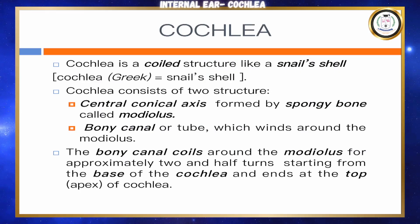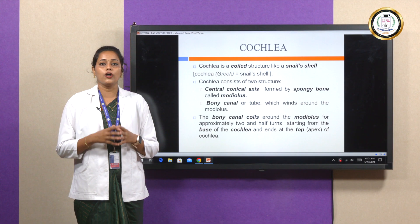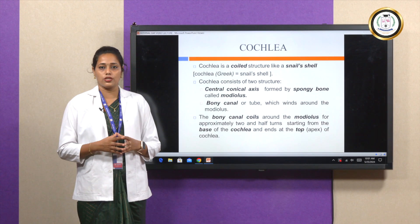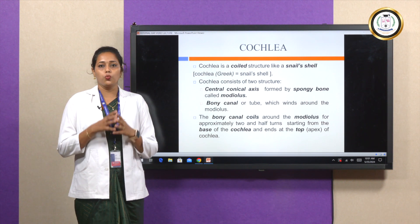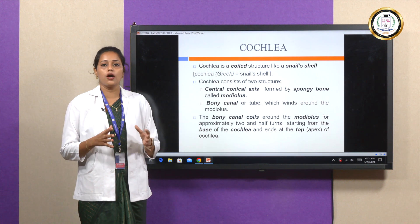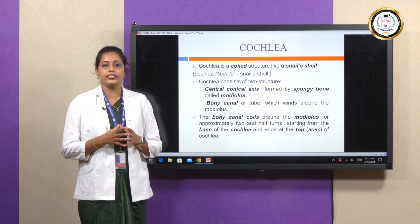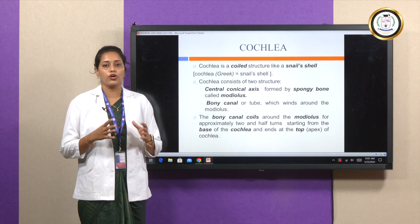Cochlea is a coiled structure, very similar to the shape of a snail's shell. In Greek, the word cochlea means snail's shell. Cochlea consists of two structures: the central conical axis formed by a spongy bone, called the modiolus.